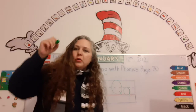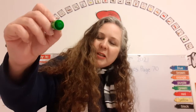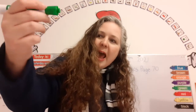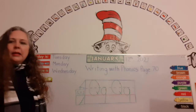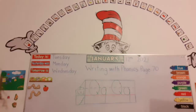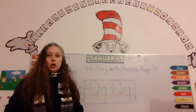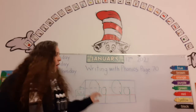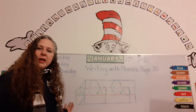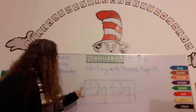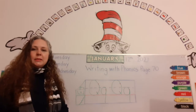Remember to hold your pencil properly with your pointer and your thumb, resting on your middle finger. Now let me get my blue marker. First we're going to do the capital Q, and then we're going to do the lowercase q. Your Writing with Phonics is just like mine here — it has lines, and we have upstairs, downstairs, and the basement.